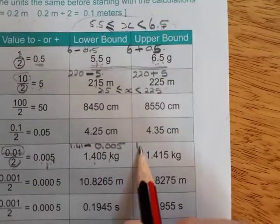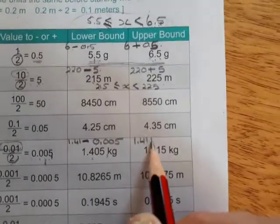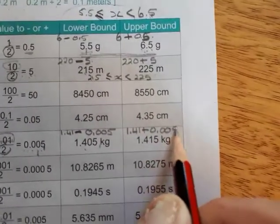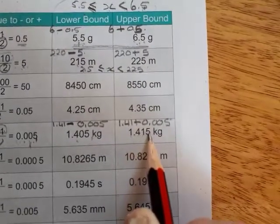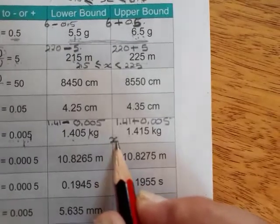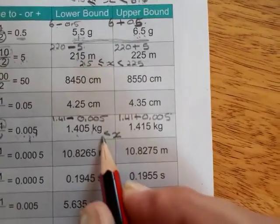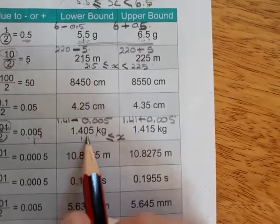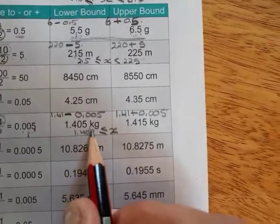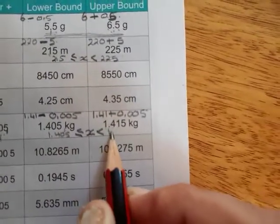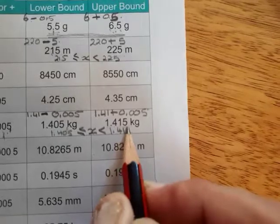And then for the upper bound, you have 1.41, add here 0.005, and that gives you 1.415. So the inequality would read X is greater than or equal to 1.405, and less than 1.415. In this case, it's kilogram.